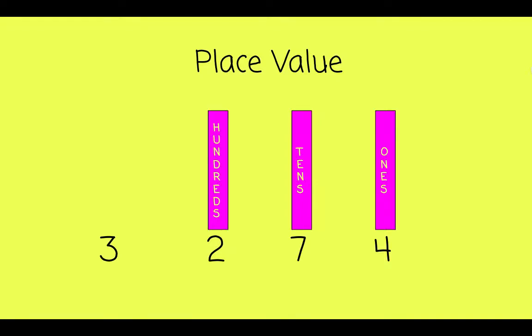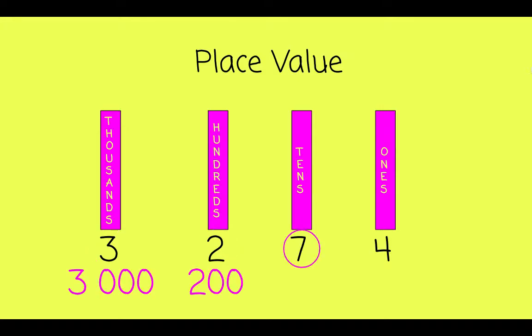To the left of that is the 100s column. And to the left of the 100s column is the 1000s column. This 3 is in the 1000s column, so it represents 3000. This 2 represents 200. This 7 represents 7 10s, or 70. And that 4 just represents 4 1s, which is 4. When we write in expanded form, we put addition symbols in between.